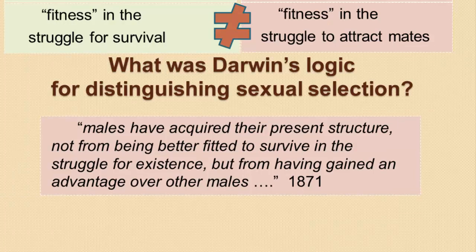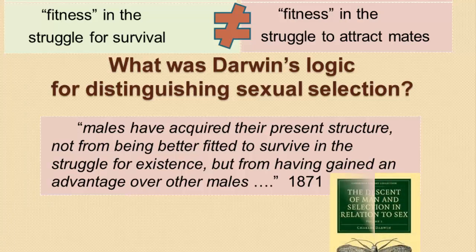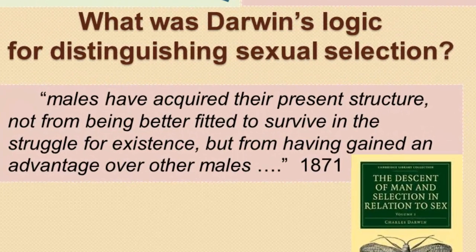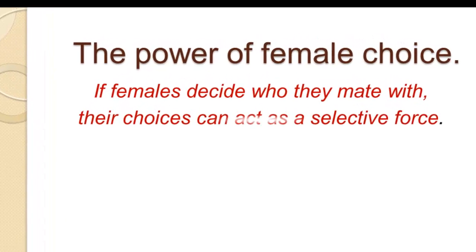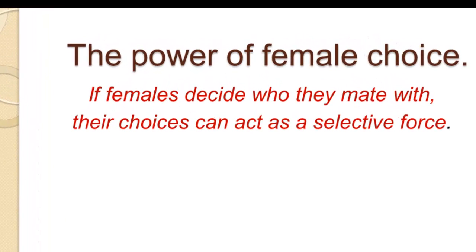Darwin's idea was that males acquired their present structure not from being better fitted to survive in the struggle for existence, but from having gained an advantage over other males — and that was his definition of sexual selection, articulated in a later book twelve years on. There is also the power of female choice: if females can exercise choice over who they mate with, those choices can themselves act as a selective force.